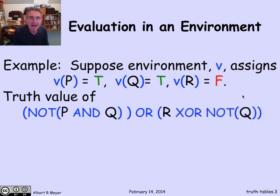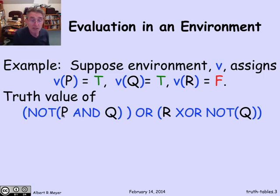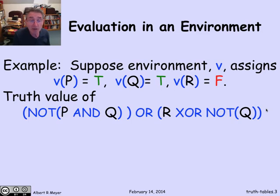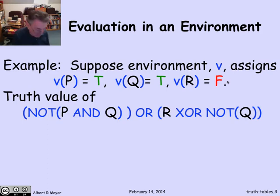Now let's see how I would use this particular environment to figure out the value of this composite formula, whose atomic parts are p and q and r and q again. Let's take a look at how we would go about figuring out the value of this whole formula, given the values of p, q, and r. The methodical way to do it is from inside out.